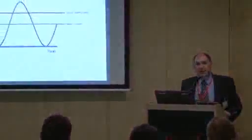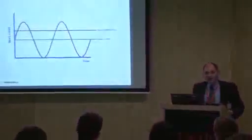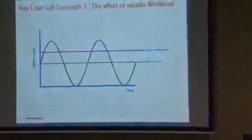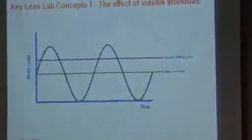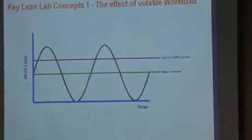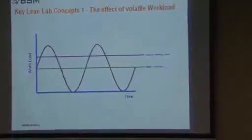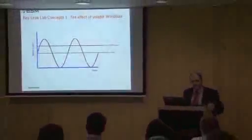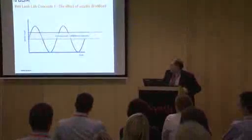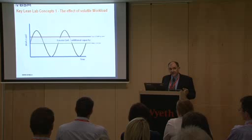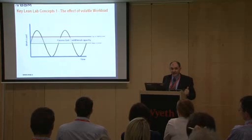That line represents the typical staffing level. If you have volatility, and it's generally true in most pharma, it's a bigger sin to be late than to be expensive. So the answer to volatility for most labs is that over time they have secured more resources than you would need for the mean — but it's never enough to deal with the ultimate peaks because you just couldn't carry that cost all the time. The difference between those two lines is, depending on your business need, either excess cost or additional capacity.